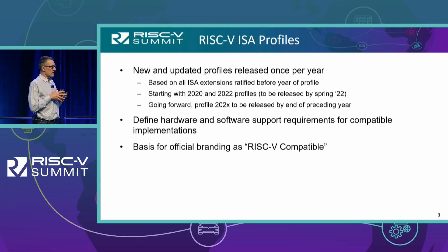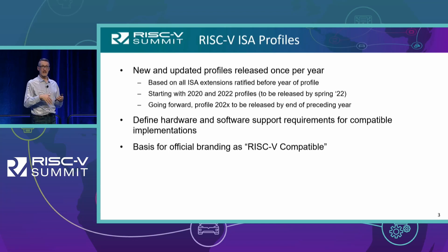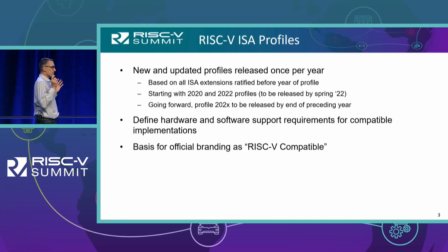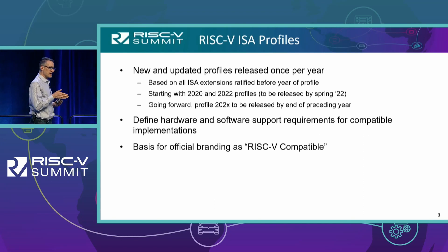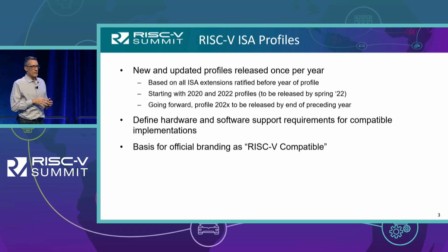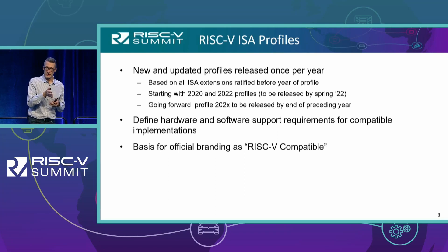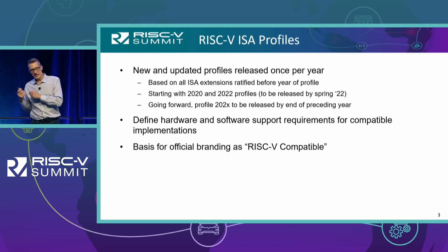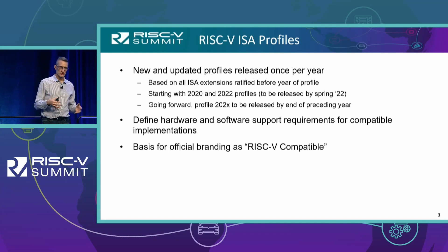Leading up to this point through the year, there have been a lot of architecture extensions that have gotten across the goal line and been ratified on top of ones we've had for a couple of years. Coming soon will be profile specs, built on top of that. In general the idea is there will be a yearly cadence for ISA profiles. For the 2022 ISA profiles, they're based on what has been ratified up until the end of 2021 — the year before the year of the profile. The 2020 and 2022 profiles will be released by early spring of this year in final approved ratified form.